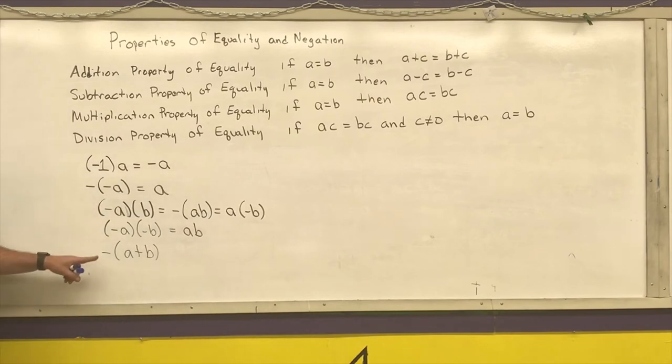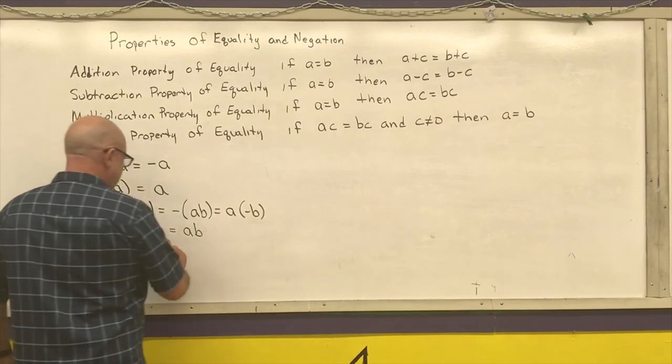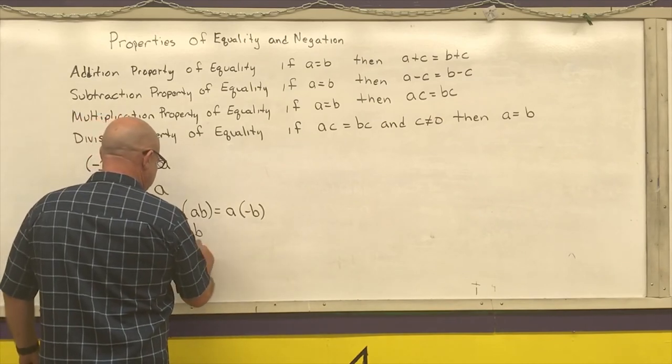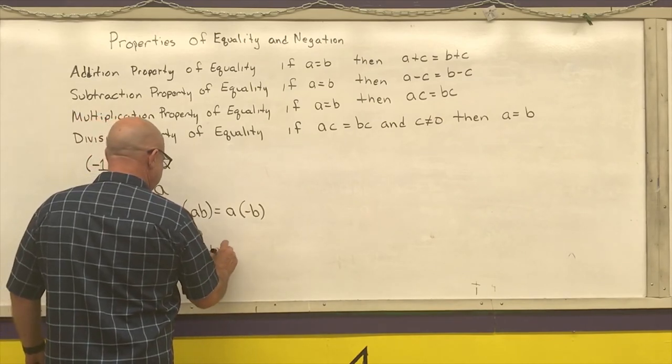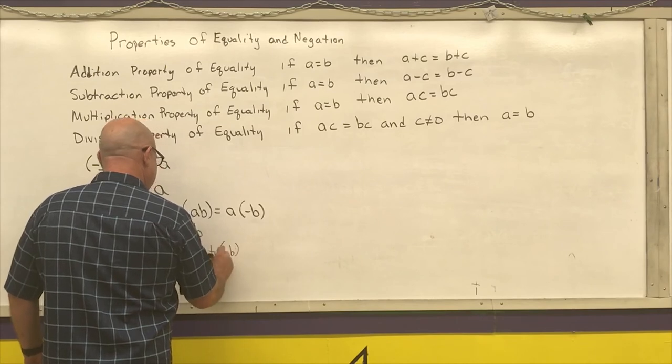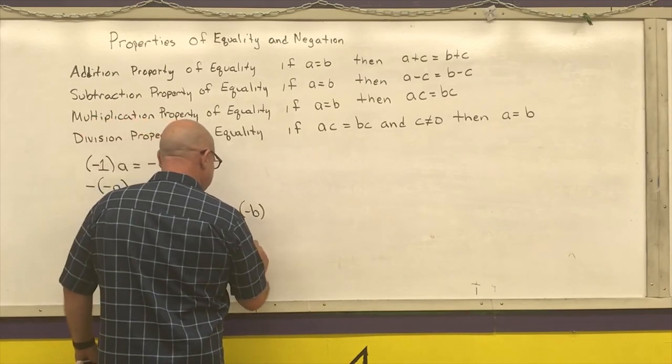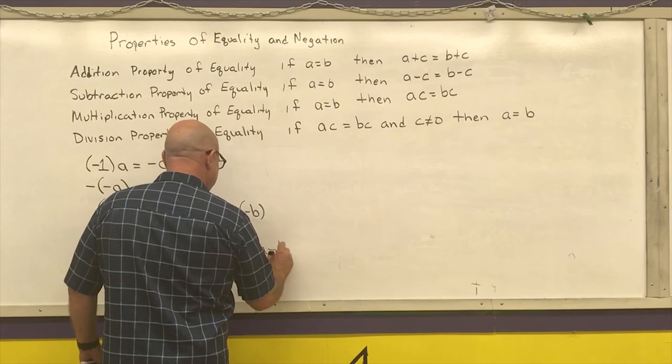And a negative number times (a+b). Remember that this is actually a negative one out here and that negative one using the distributive property gives me negative a plus negative b, which I can write as negative a minus b.